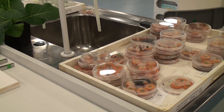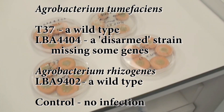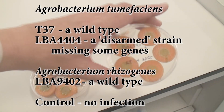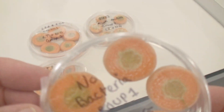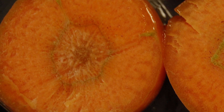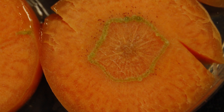For the carrots we've got four different treatments: those that had no bacteria added to them and those that had the three different types of bacteria. In the carrots used as a control with no Agrobacterium infection, there's been a minimal amount of cell division on the surface of the cells and the tissue looks slightly dry. In the carrots with the so-called disarmed strain of Agrobacterium tumefasciens, called LBA 4404, there's also been minimal growth and division of the cells.